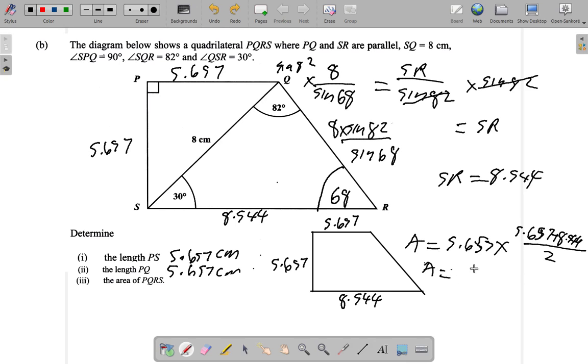So the area is, let's work it out. 5.657 plus 8.544 equals, that divided by 2 equals 7.1, and then multiply by 5.657. And that gives you 40.168. So the area is 40.17.